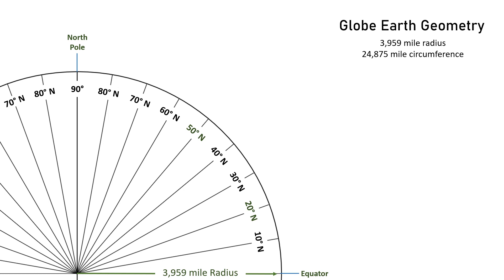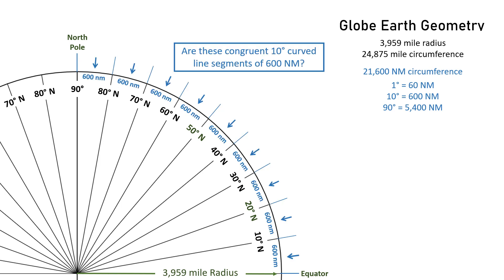Now, I'd be willing to bet that this globe geometry works. So we have a globe with a radius of 3,959 miles, and that gives us a 24,875-mile circumference. And since this is the equivalent of 21,600 nautical miles, that means that 1 degree equals 60 nautical miles, 10 degrees equals 600 nautical miles, and 90 degrees equals 5,400 nautical miles. And it's really not that hard to understand that these are congruent 10-degree curved line segments that are 600 nautical miles long.